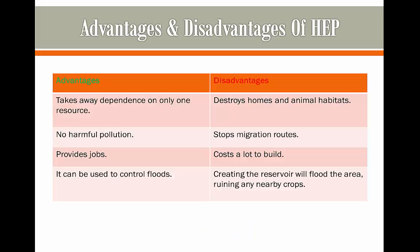Here are the advantages and disadvantages of using hydroelectric power. The advantages are that it's going to reduce dependence on only one resource. No harmful pollution is going to be produced and the construction of the dam is going to provide jobs. It can also be used to control floods, which is quite useful because then you're not going to suffer from all of the socio-economic consequences of having a flood. However, it does destroy homes and animal habitats, and it may stop migration routes of animals. It also costs a lot of money to build.